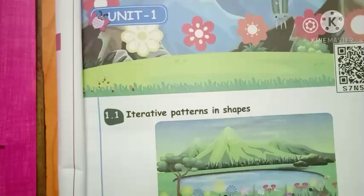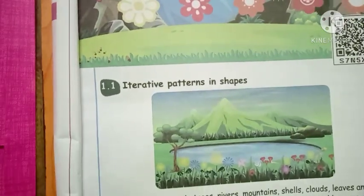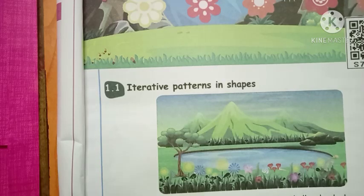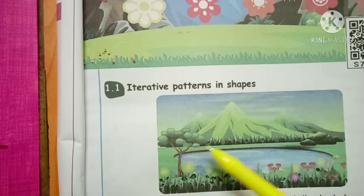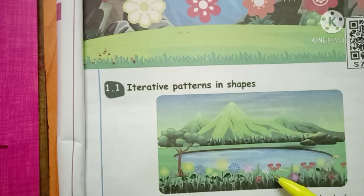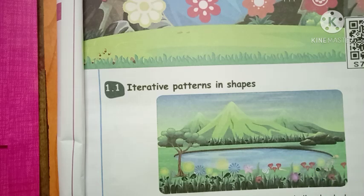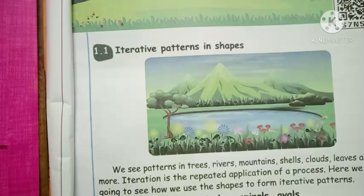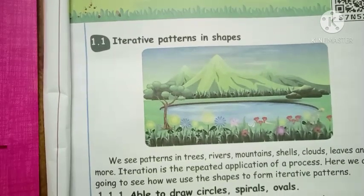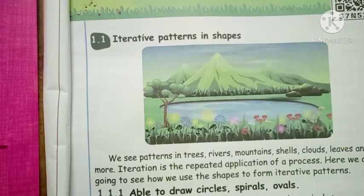Look at this picture. Here we have a tree, mountain, flowers, snail, river, and pond. Everything here has some shapes. We can see in this picture: tree, river, mountain, shells, clouds, leaves, and more.